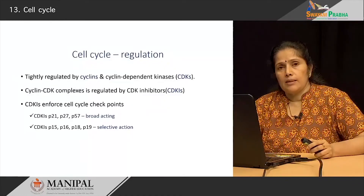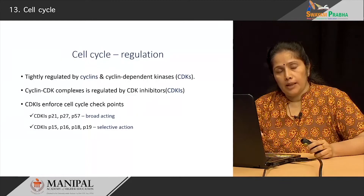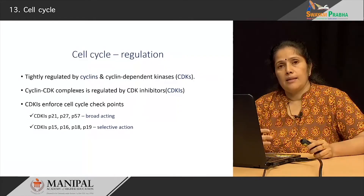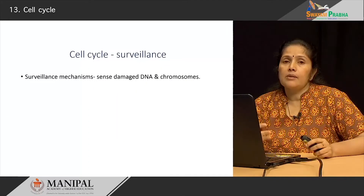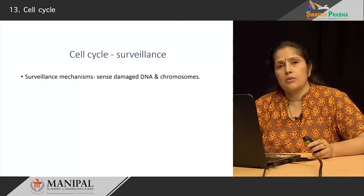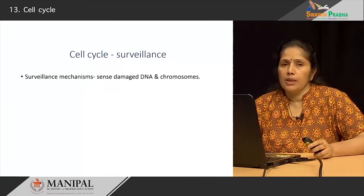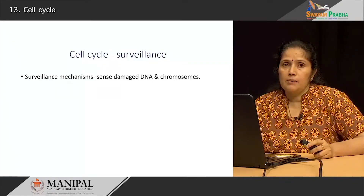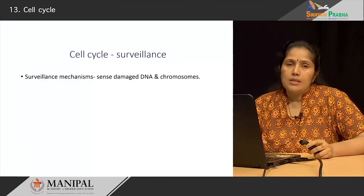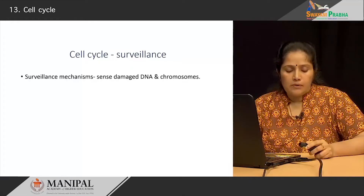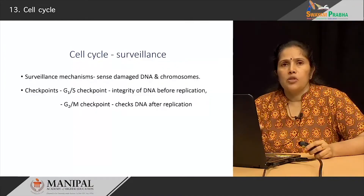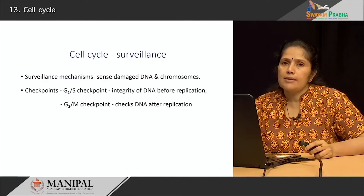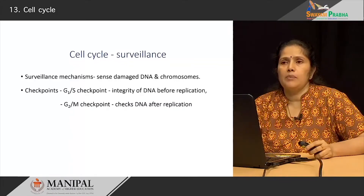The checkpoints check whether the replicating cells have the appropriate type of DNA with no DNA damage and that the cell organelles have been created in the right manner. This is known as surveillance of the cell cycle, and its function is to sense any damage occurring to the DNA or chromosomes. There are two important checkpoints: the G1-S checkpoint region and the G2-M checkpoint region.